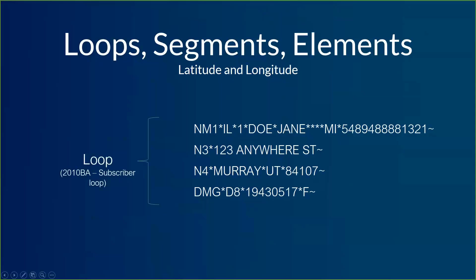The next one is the segment. Each individual line is a different segment. When you look at a raw file, it may or may not be split out with each segment on its own line — sometimes you have to parse it out manually. But even if the information were all run together, you can still tell where segments are beginning and ending, because they will always begin with some kind of short code, usually two or three characters, and they will always end with a tilde — that squiggly line at the end. Each of these segments are named after that code at the beginning — so we would say an NM1 segment, an N3 segment, or an N4 segment.